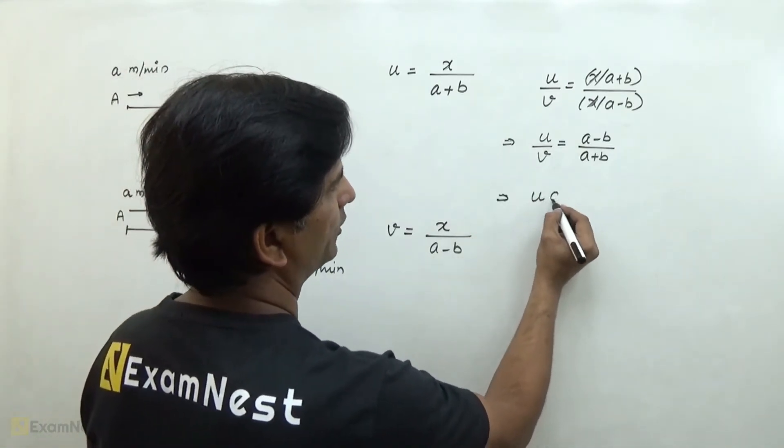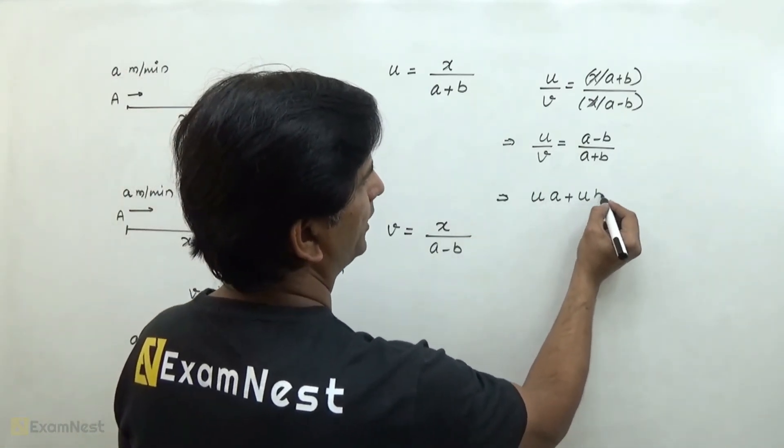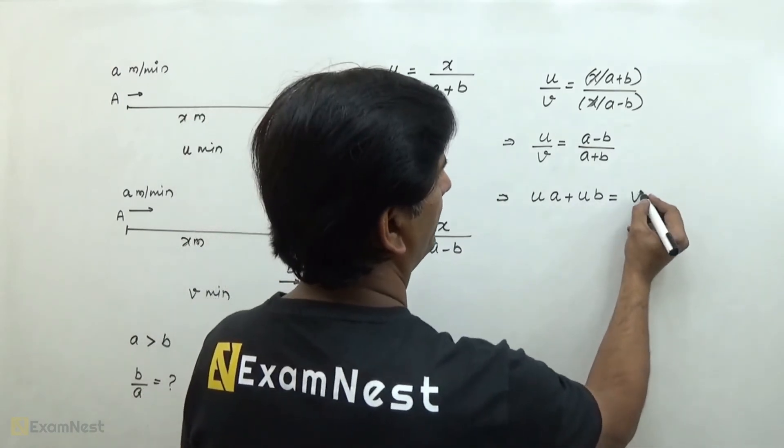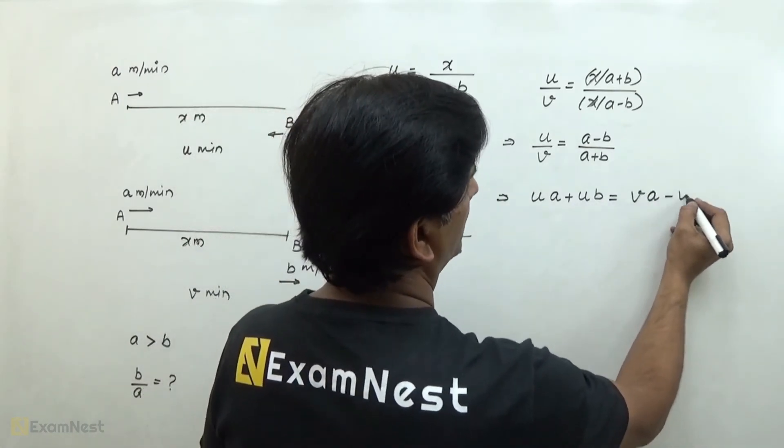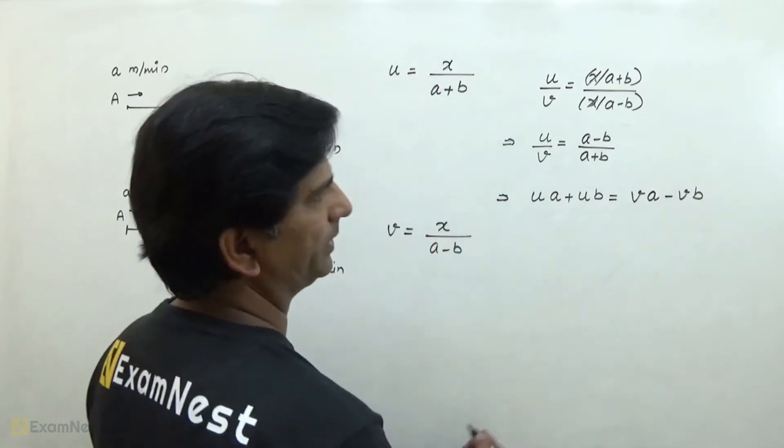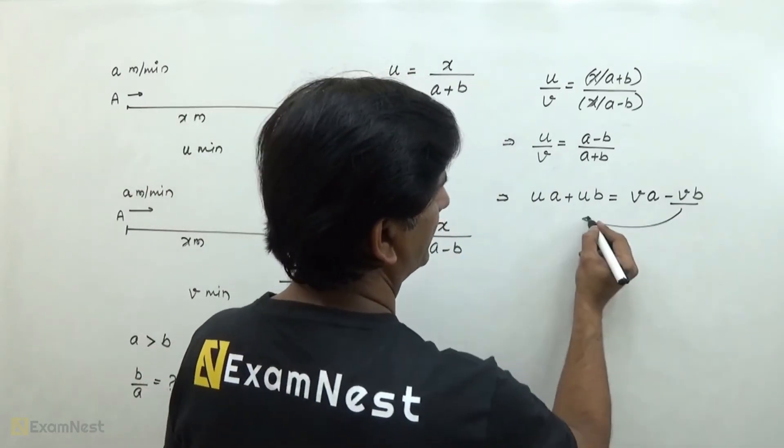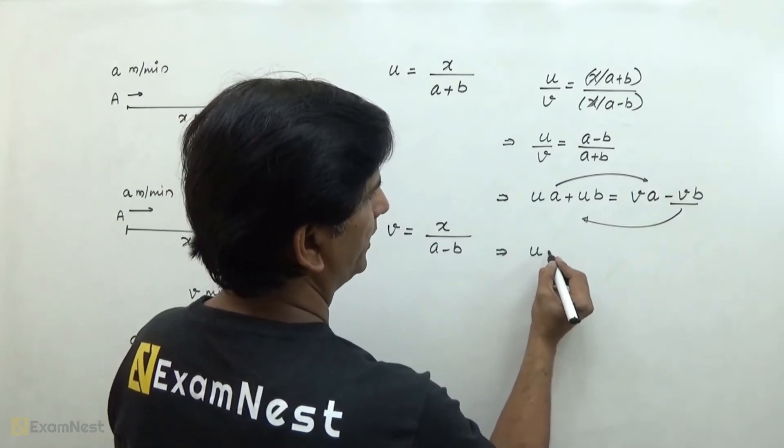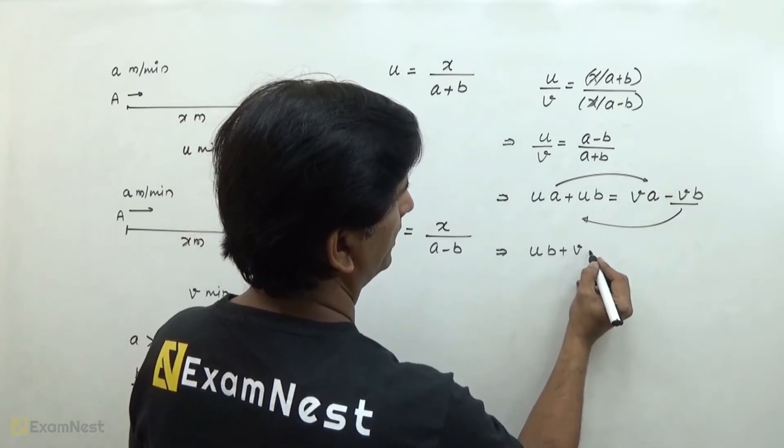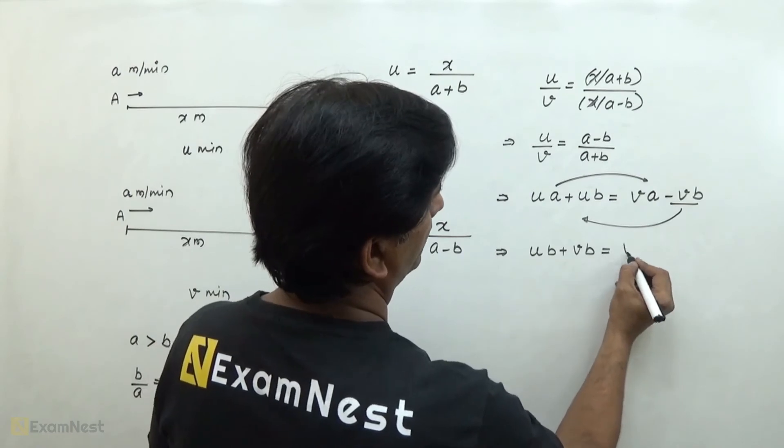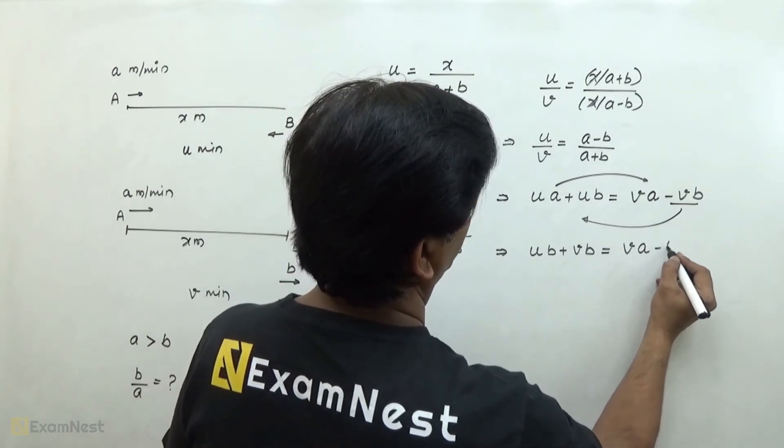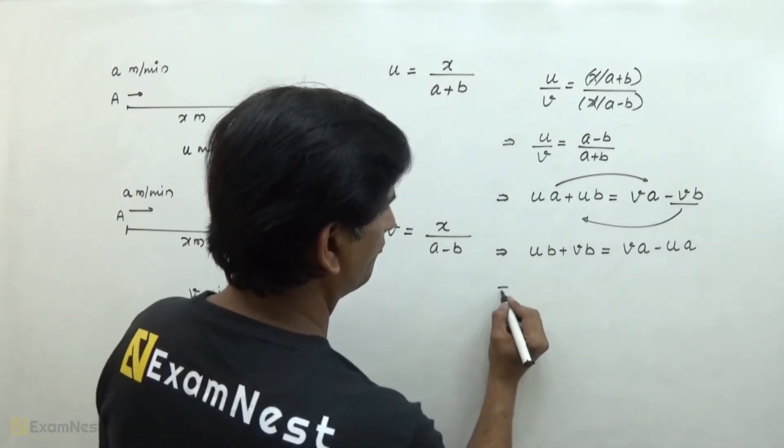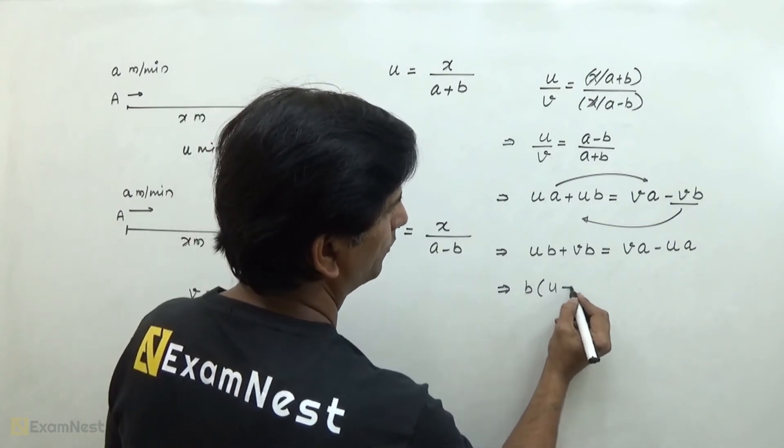u times a plus u times b equals v times a minus v times b. V times a minus u times a. From b we can take common, u plus v.